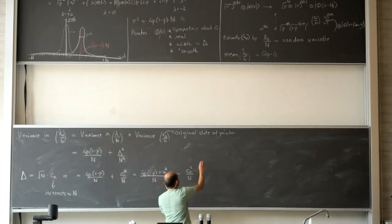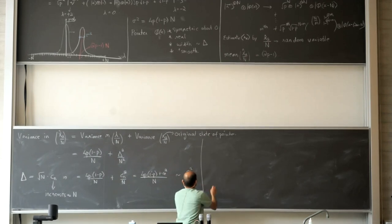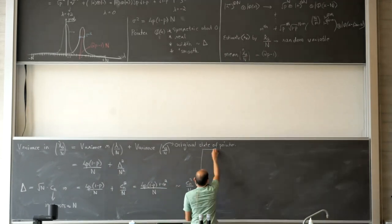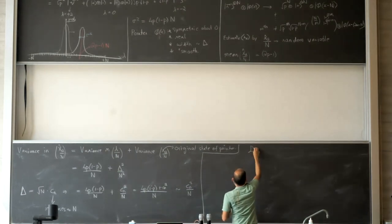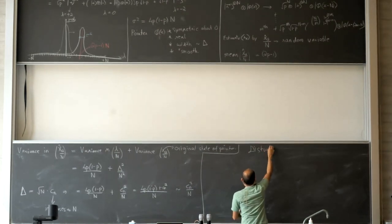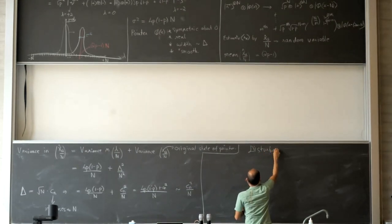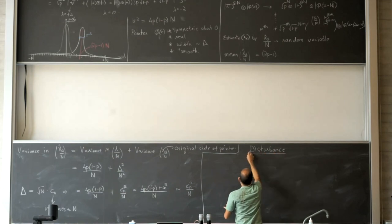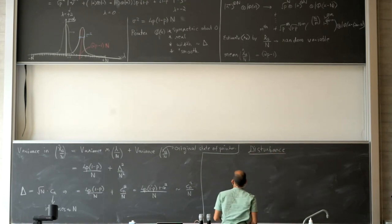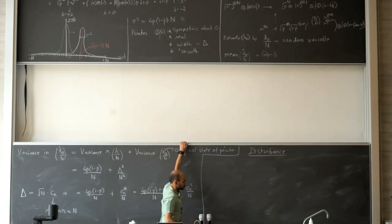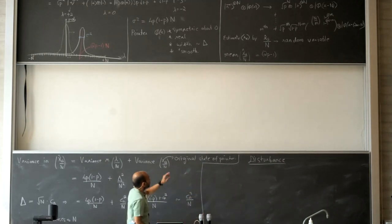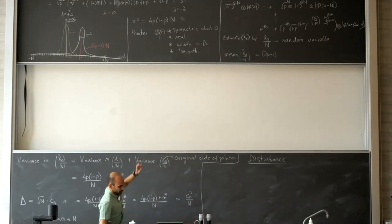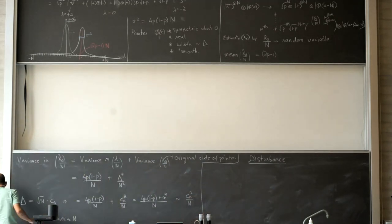Now I want to calculate the disturbance. I'm going to look at how the density matrix changes under the transformation. This is analogous to what we had yesterday for a single spin, where the diagonal elements remain the same but the off-diagonal elements are multiplied by the overlap between the shifted pointer states.